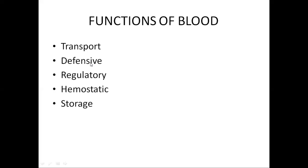The defensive function: WBCs are part of blood and are called the soldiers of the body; they protect the body from infectious agents. The regulatory function: blood is involved in the regulation of pH and acid-base balance — if acids are more, pH is low and blood is acidic; if bases are more, pH is high and blood is alkaline; normally blood is slightly alkaline. The hemostatic function: platelets and clotting factors are involved in maintenance of hemostasis, so whenever there is an injury, blood clots form to seal the injured point. The storage function: blood is involved in the storage of oxygen, carbon dioxide, various nutrients, and electrolytes.